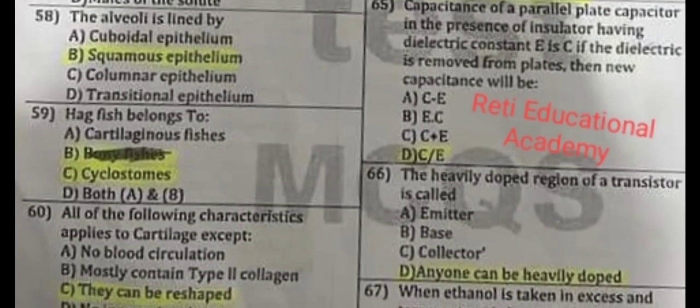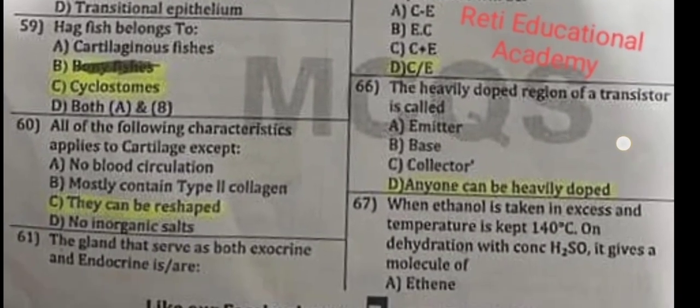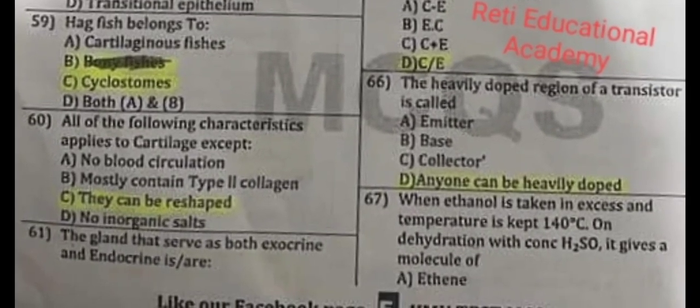Question number 65: Capacitance of a parallel plate capacitor in the presence of an insulator having dielectric constant ε — if the dielectric is removed from the plates, the new capacitance will be D. Question number 66: The heavily doped region of a transistor is called the emitter — anyone can be heavily doped. Question number 67: When ethanol is taken in excess and temperature is kept at 140°C on dehydration with concentrated H₂SO₄, it gives a molecule of ether.